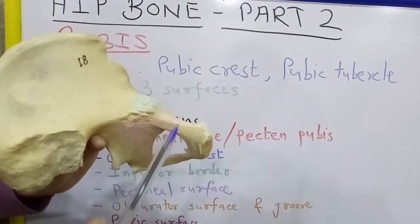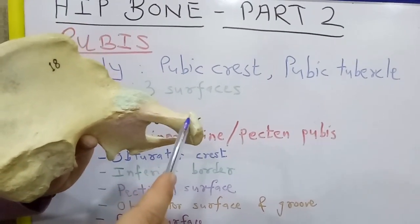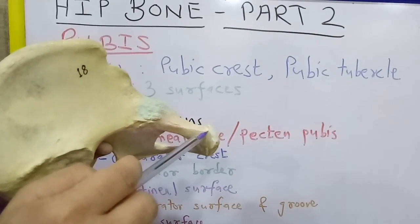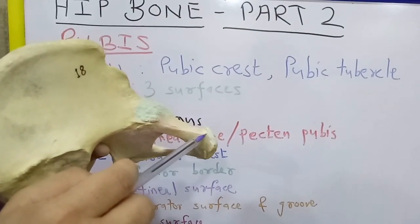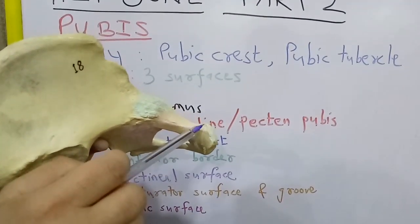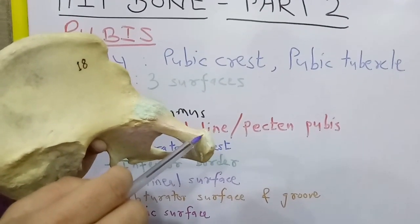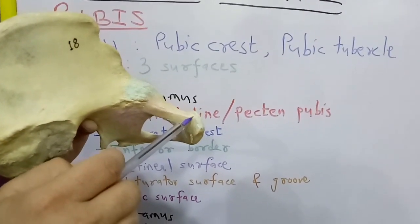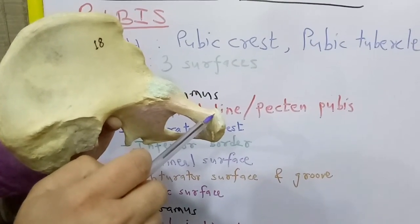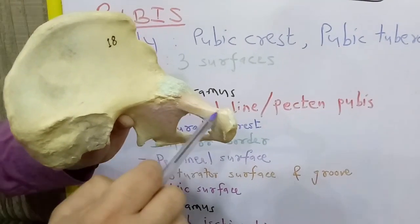Coming to the superior ramus: the pectinate line gives attachment to the conjoined tendon at the medial end of the pectinate line, and just in front of it, there is attachment of the lacunar ligament. The conjoined tendon is the fusion of the lowest aponeurotic fibers of internal oblique and transversus abdominis muscles. The whole length of the pectineal line gives attachment to the pectinate ligament.